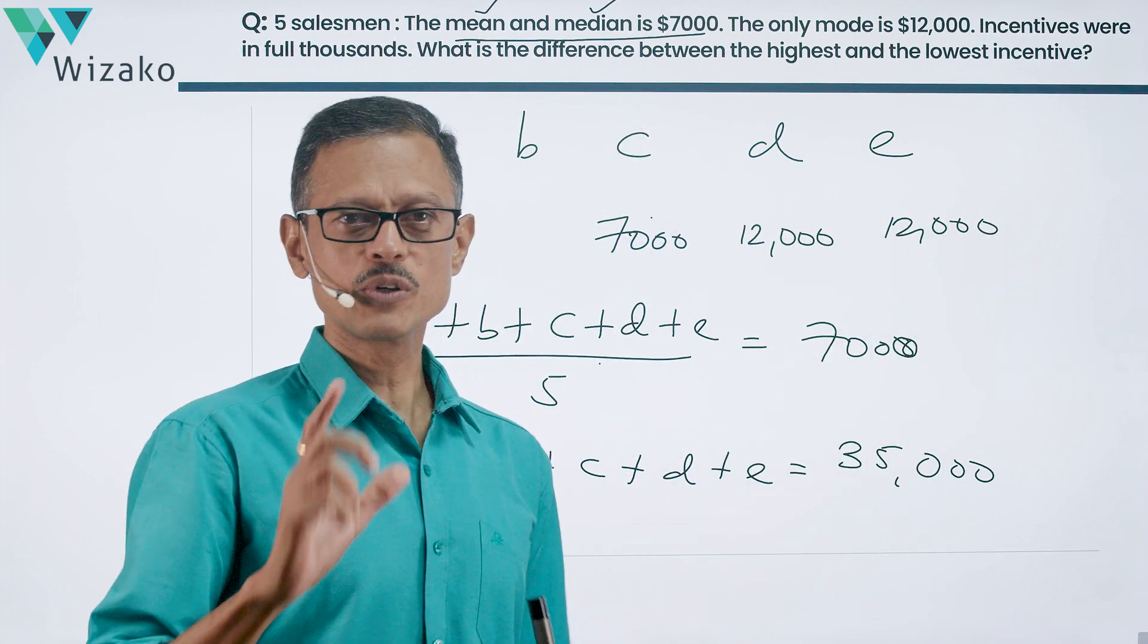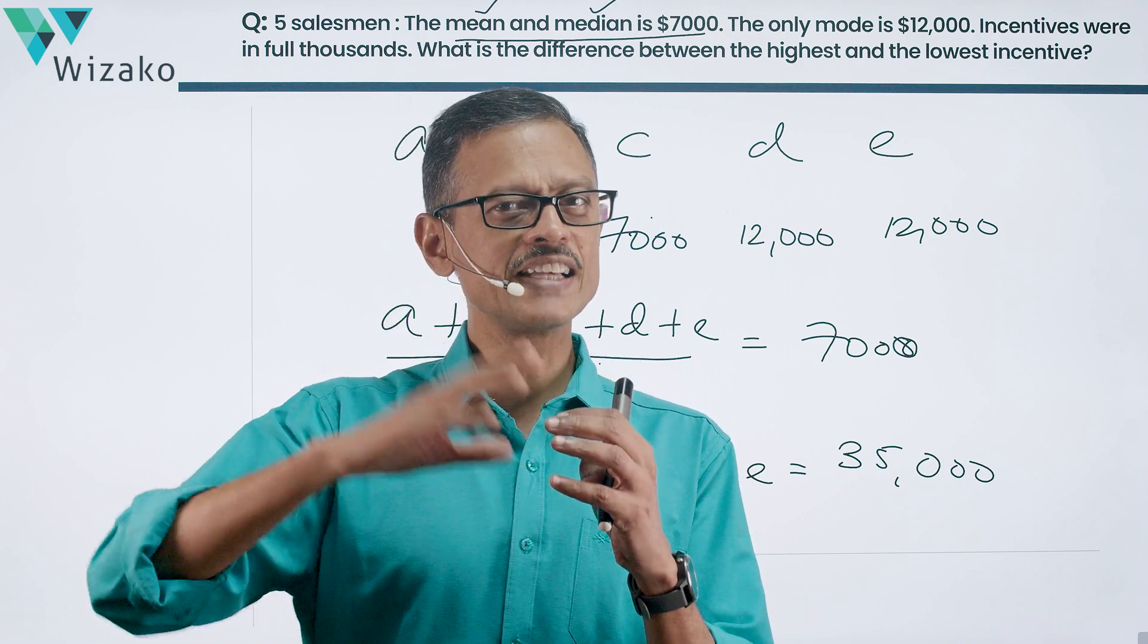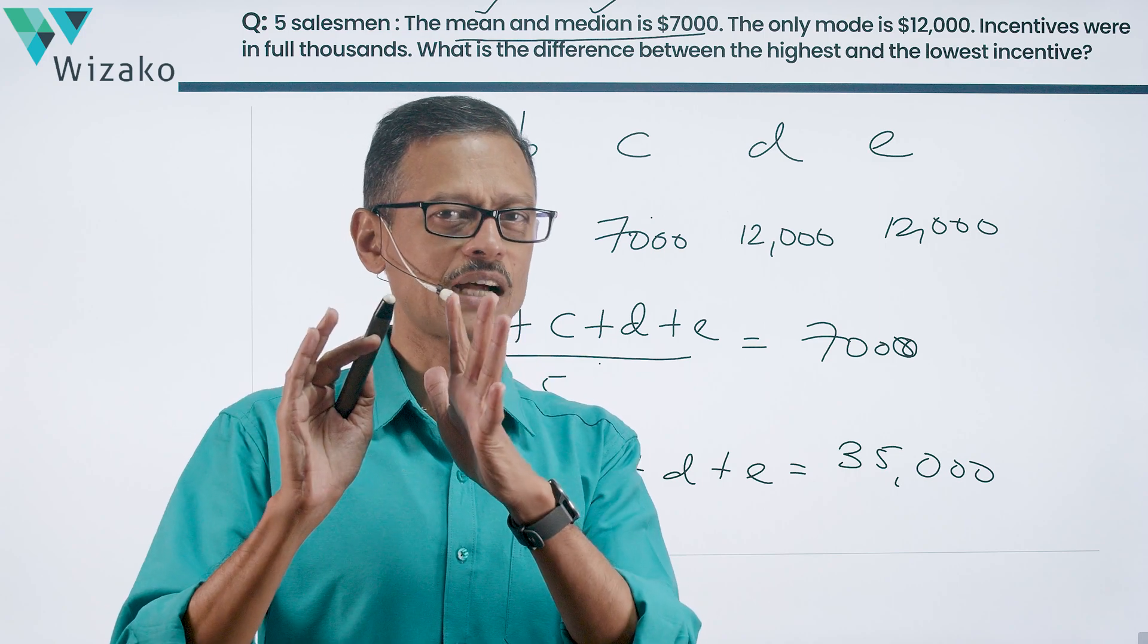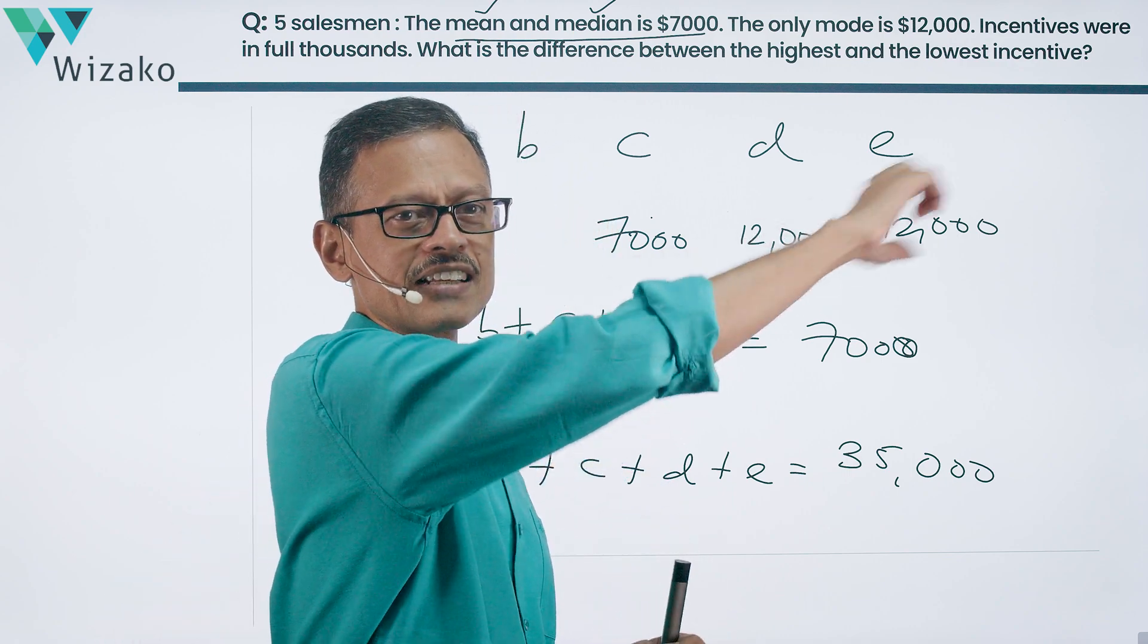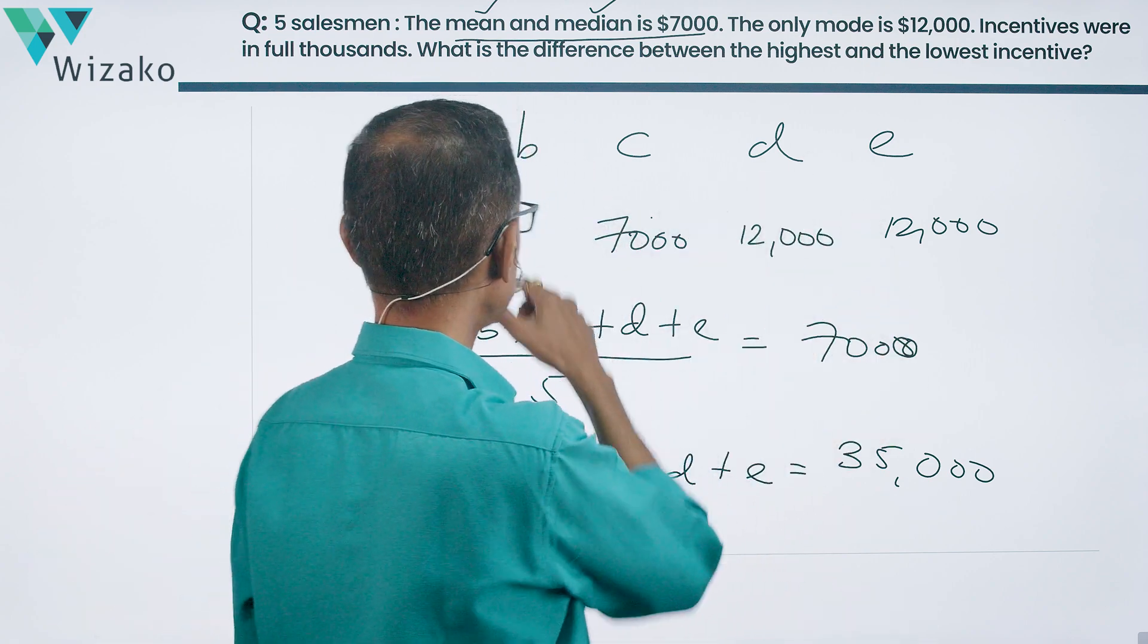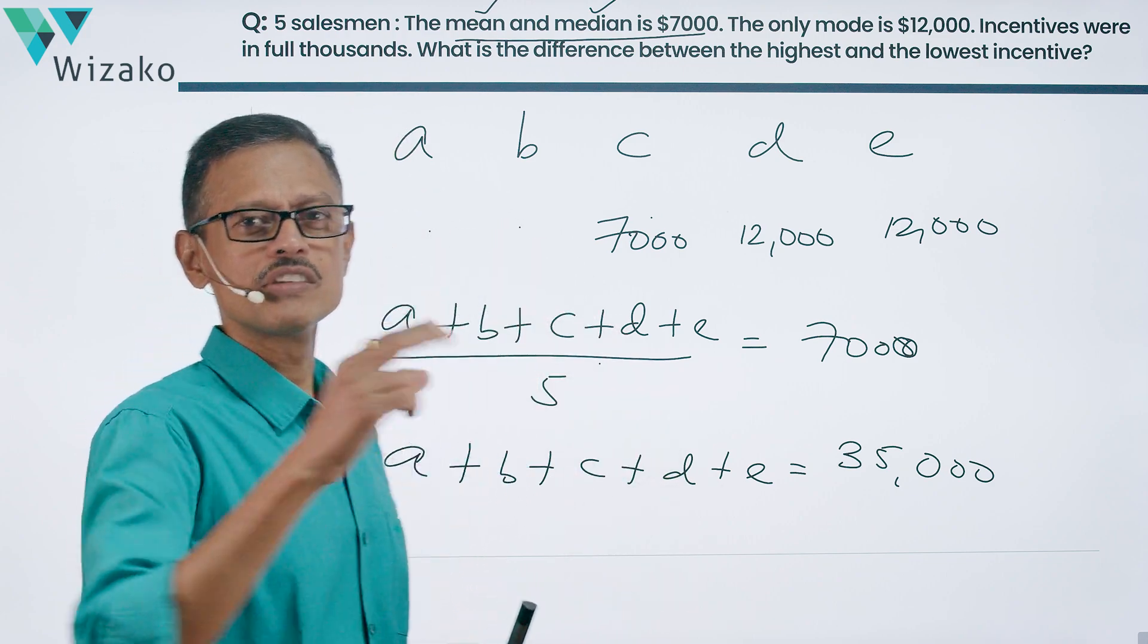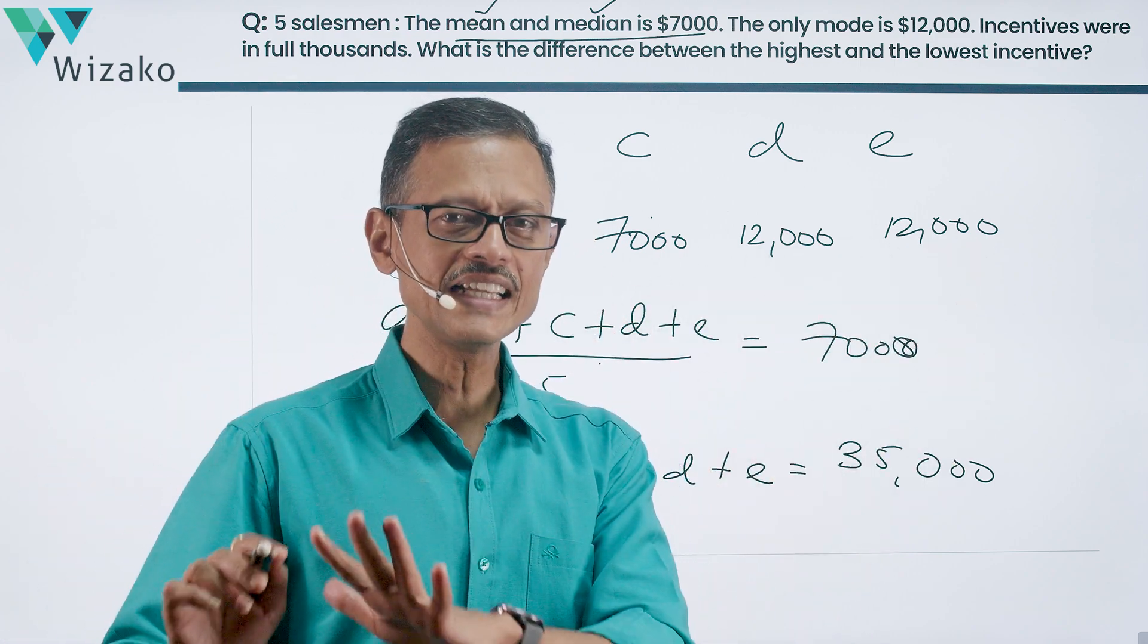Let's make sense out of this inference once more. They're saying there is a unique mode and the mode is 12,000. So only one number repeats and that with the highest frequency and that number happens to be 12,000. How many times can 12,000 appear? 7,000 happens to be the third element. So 12,000 when you're writing it in ascending order should appear to the right of the 7,000. There are only two slots available. So those two slots will have to go to 12,000. And these two numbers, A and B, can they be equal? If A and B happen to be the same value, then what would happen? We'll have more than one mode. The question says there's a unique mode. So 12,000 is the only number that repeats. It appears twice. So D and E are 12,000. C is 7,000.